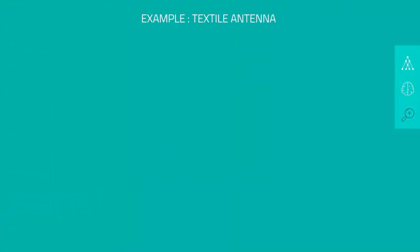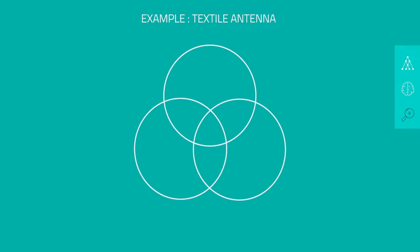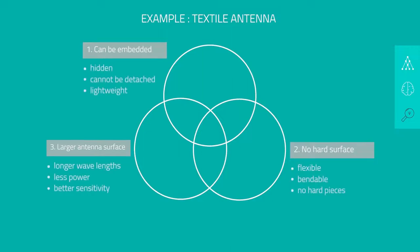Let's give an example. Somebody developed a new textile antenna that had three key elements. Each of those elements has a couple of valuable consequences. The fact that the antenna is embedded has the consequences that it is hidden and has a nice look and feel, it can't be detached from the textile, and it's very lightweight.